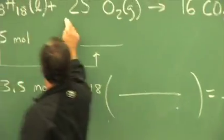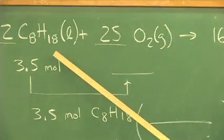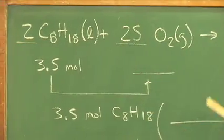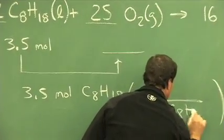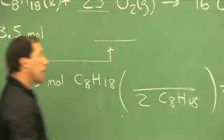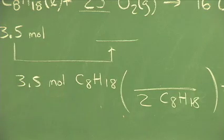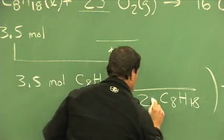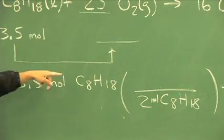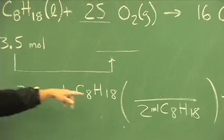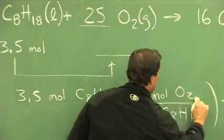Let me underline the values that we'll use for this particular one. 2 moles of octane react with 25 moles of oxygen. I just said 2 moles of octane. I know where that's going to go. It's going to go in the denominator so that the moles of octane cancel. In my haste, I left out the moles. On the top, we want moles of O2 to appear. That's what we're after. So let me put moles of O2 on the top.